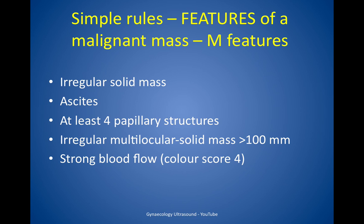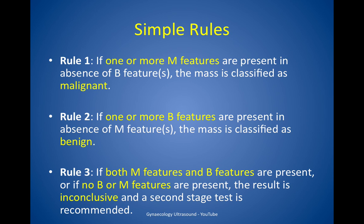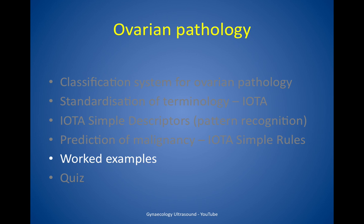Features of a malignant mass — the M features — are: if the mass is solid and irregular; the presence of ascites; if there are at least four papillary structures; if the mass is irregular and multilocular solid greater than 100mm; or if there is strong blood flow, a colour score of 4. The simple rules are: one or more malignant features and no benign features means malignant; one or more benign features and no malignant features means benign; both or neither means inconclusive and a second stage test is recommended.